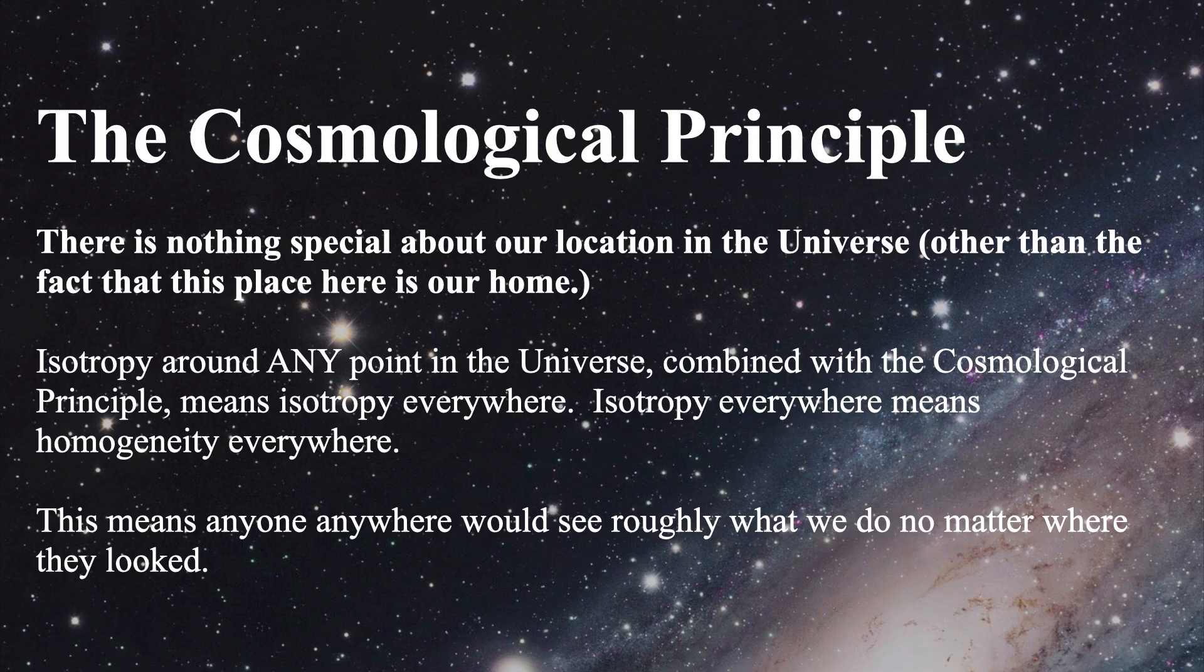The cosmological principle implies that isotropy, meaning looking the same in any direction around any one point in the universe, combined with this cosmological principle means it's isotropic everywhere. Homogeneous everywhere means it's the same stuff no matter where you go. We don't live in a special vantage place. We just happen to be where we are. That's the cosmological principle.